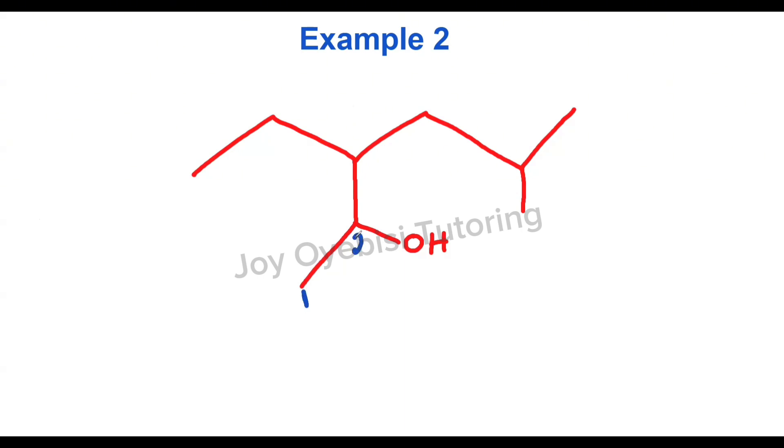This is 1, 2, 3, 4, 5, 6. If I go 3, 4, 5, counting towards the right side is much better than the left. So that means my longest continuous chain is from 1 to 6. Now, every other thing attached is the substituent or branches. So this is a branch. This also is a branch.